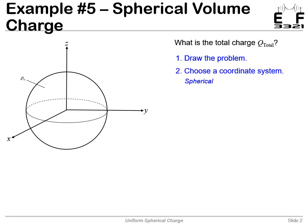Choose a coordinate system. Since our charge distribution is a sphere, it makes sense that we would choose spherical coordinates. We write the general equation. The total charge is just a triple integral, a volume integral, where we're integrating the charge density times the differential volume.